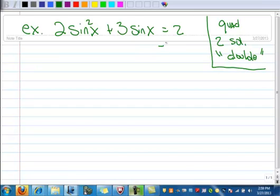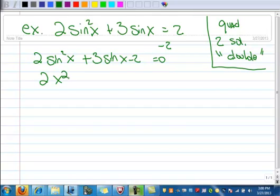So the first thing I want to do is subtract 2 from each side. So I have 2 sine squared x plus 3 sine x minus 2 equals 0. So this looks just like 2x squared plus 3x minus 2.